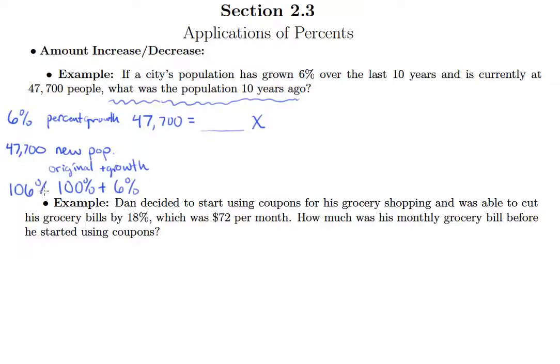That gives you 106%. And so these two numbers do go together. So right here, I'm going to put 1.06, right? So 47,700 is 106% of what it was 10 years ago, not 6%. Okay, so now, of course, we can solve this by dividing both sides by 1.06.